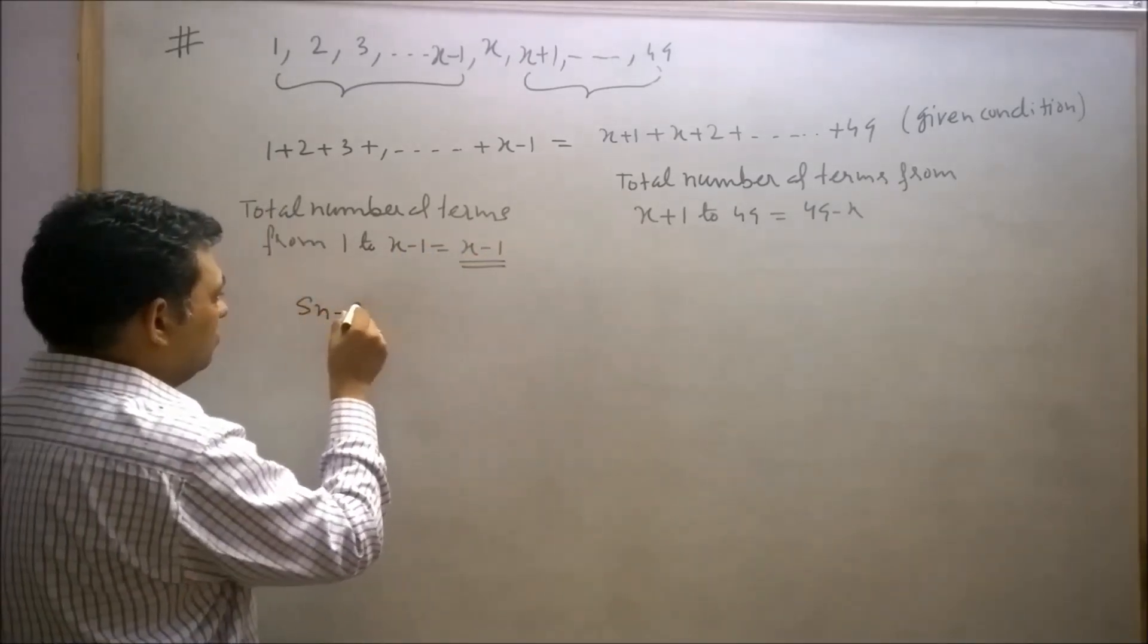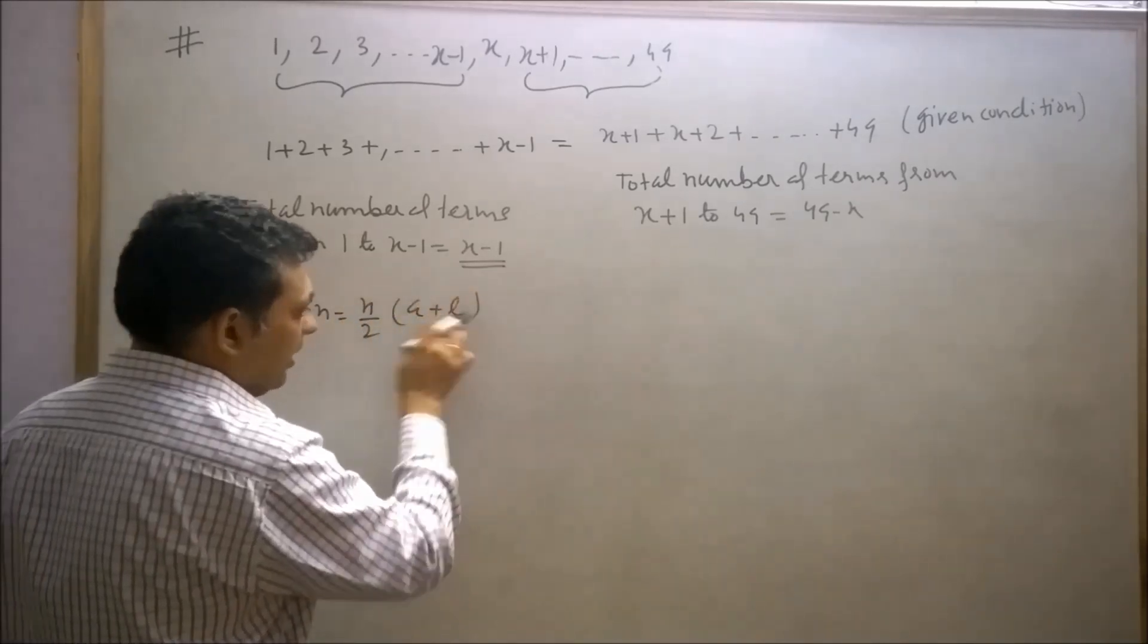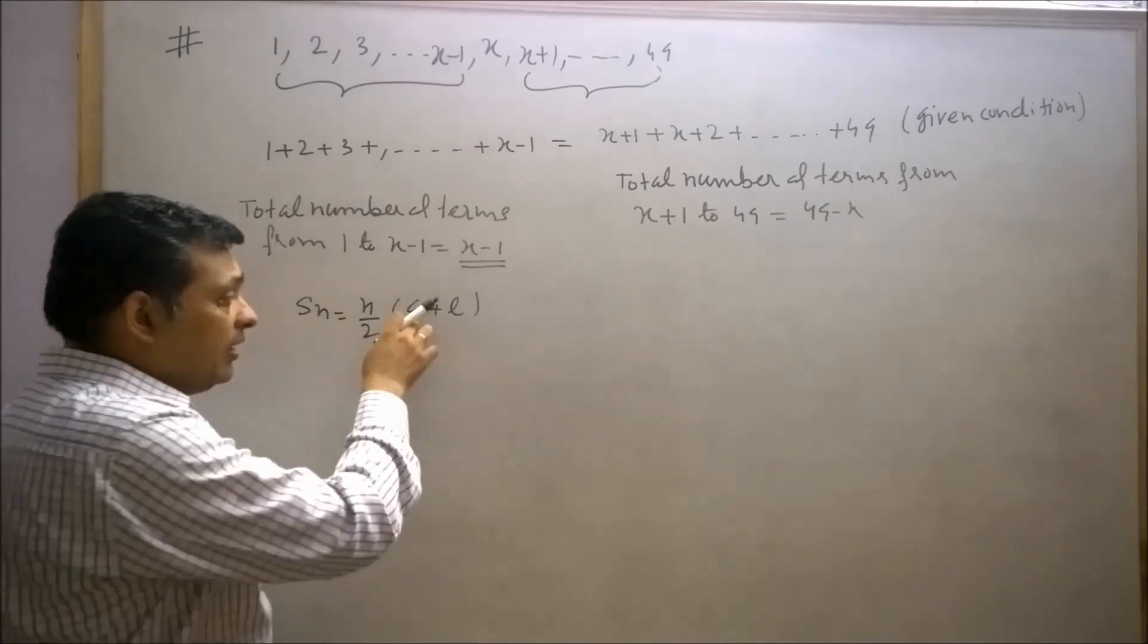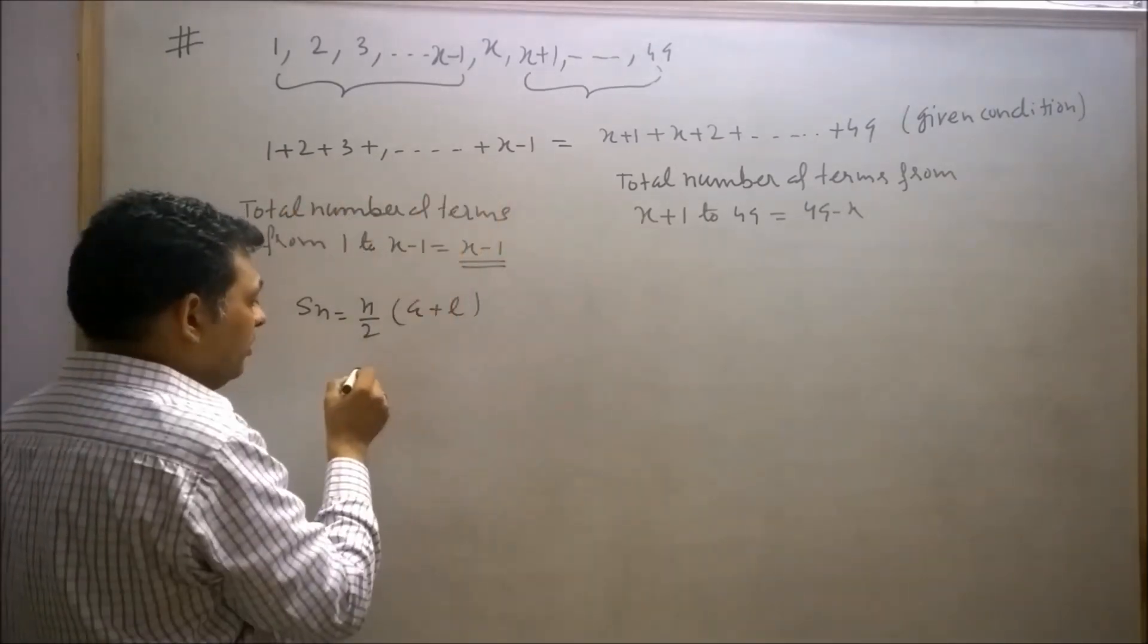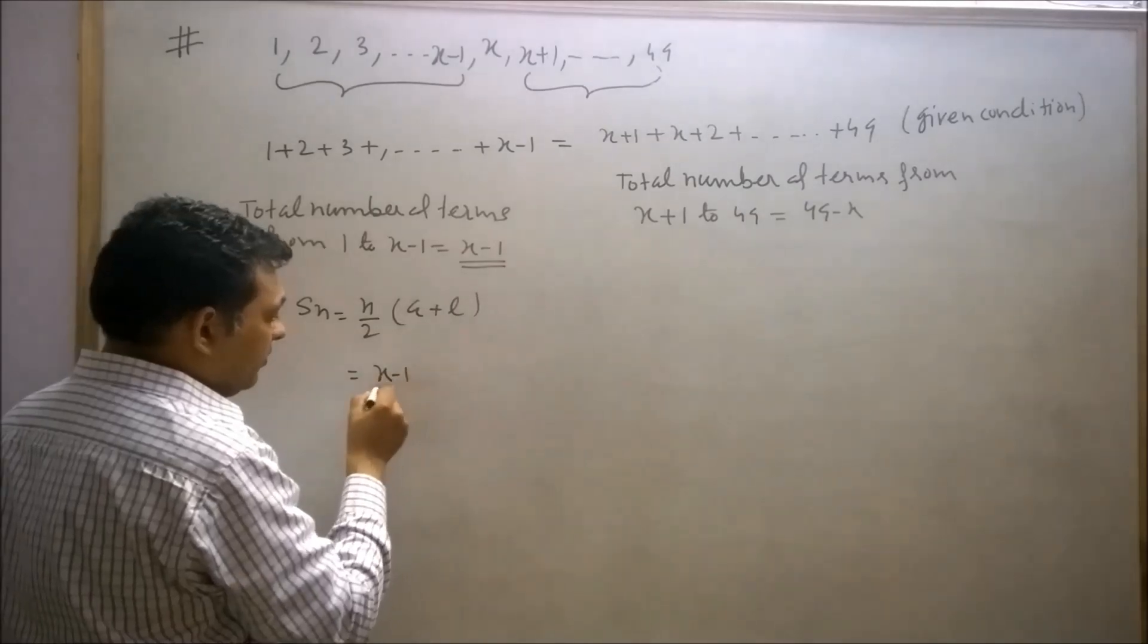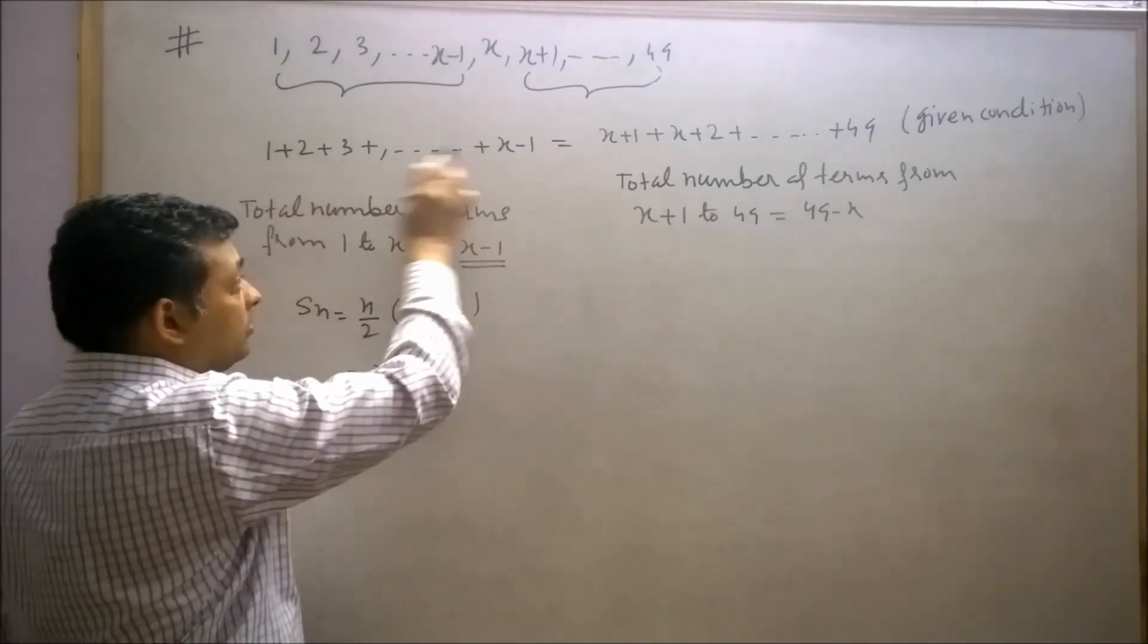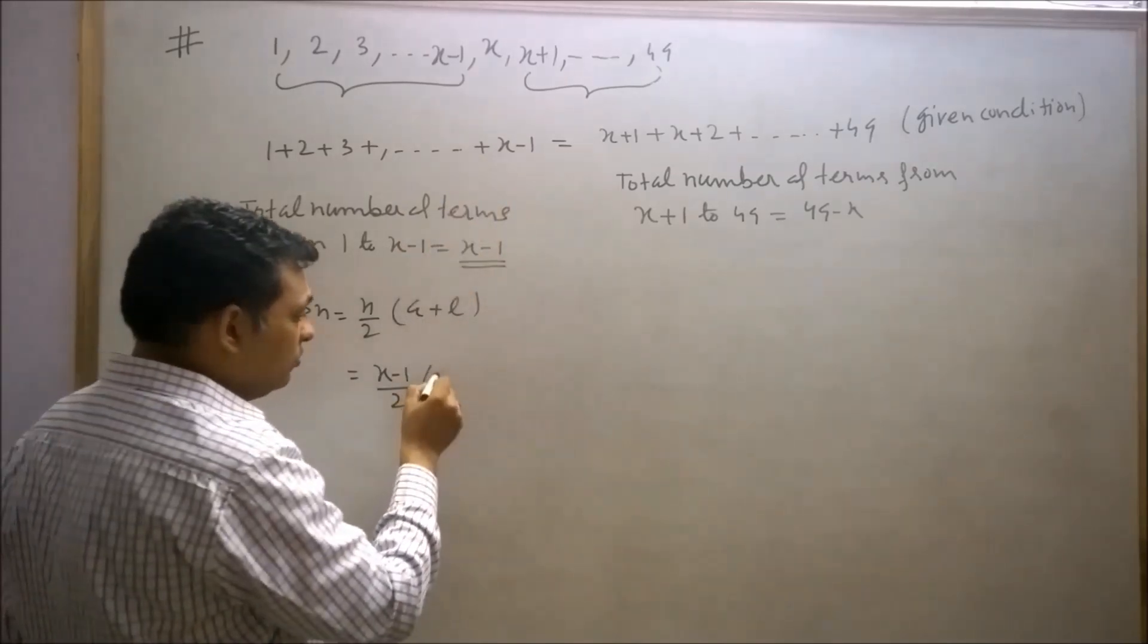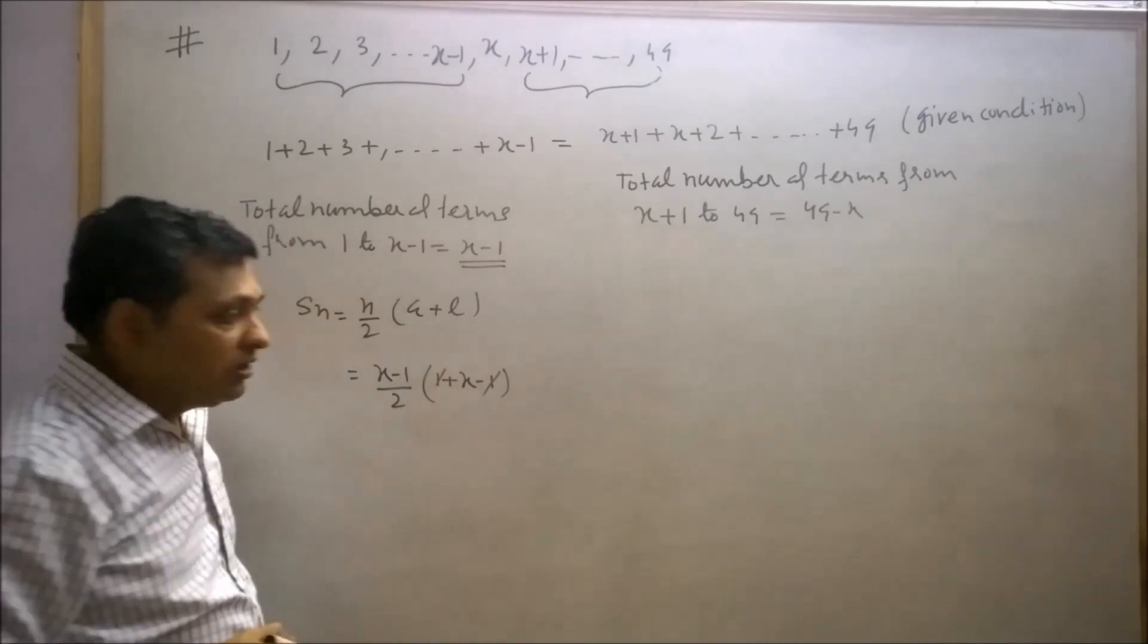And we know that Sn equals n/2 times (a + l), where l is last term and a is first term. So the sum of this term will be (x-1)/2 times (1 + (x-1)).